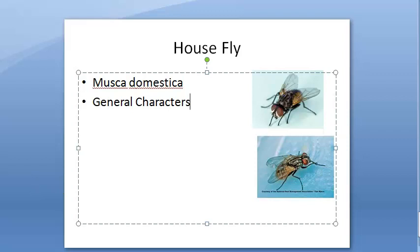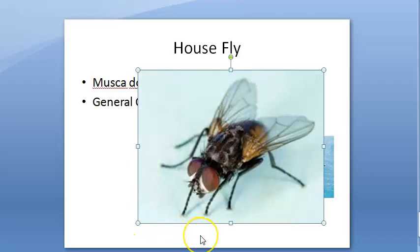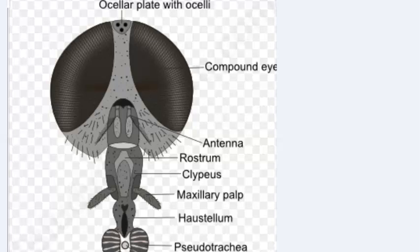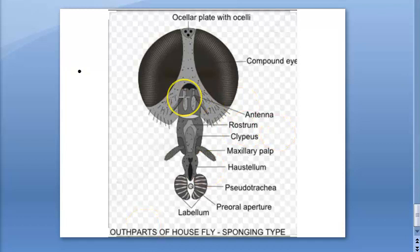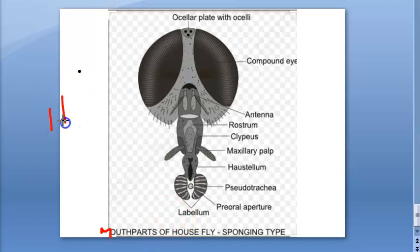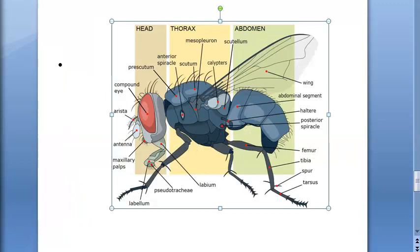The common house fly is mouse-gray colored. The body is divided into three parts: head, thorax, and abdomen. The head will have the mouth, a pair of antennae, and compound eyes.